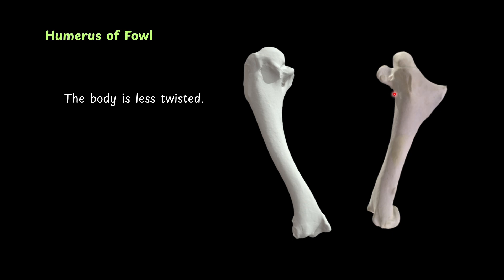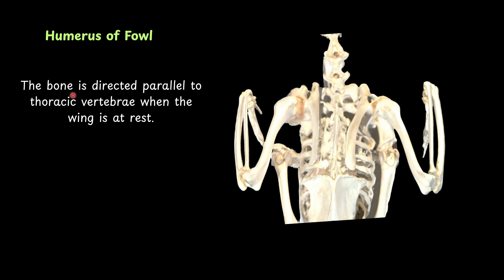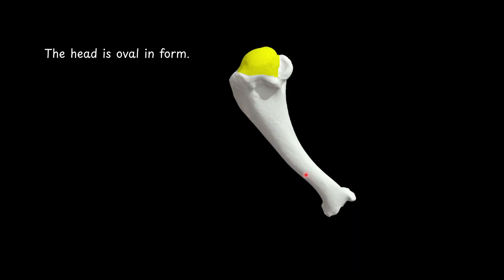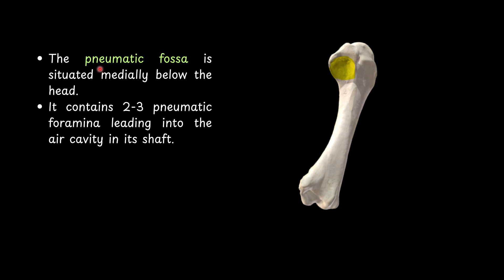Humerus of fowl: the body is less twisted. The bone is directed parallel to the thoracic vertebrae when the wing is at rest. Proximally, it articulates with the scapula and coracoid. The head is oval in form. An important feature is the pneumatic fossa, present medially below the head, which contains two to three pneumatic foramina leading into the air cavity inside the shaft.